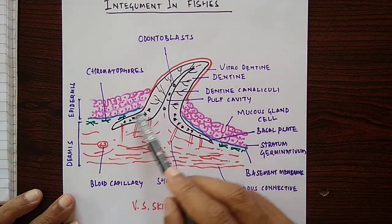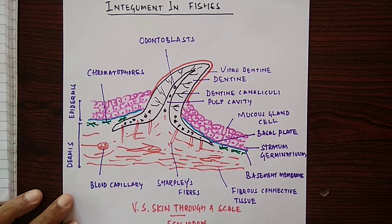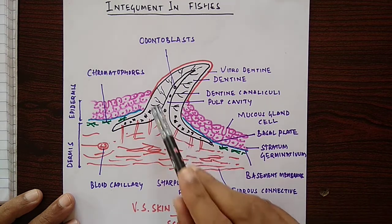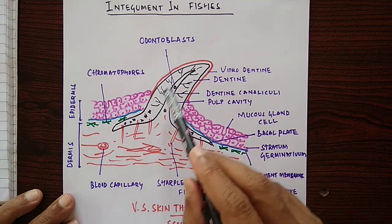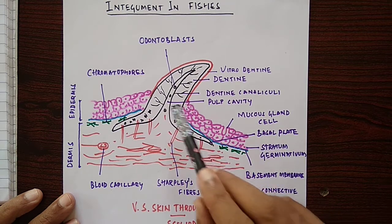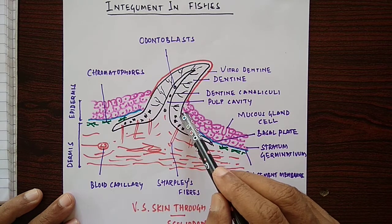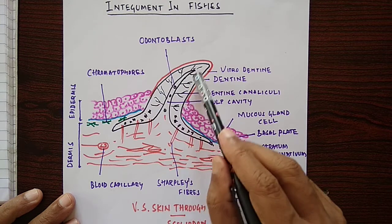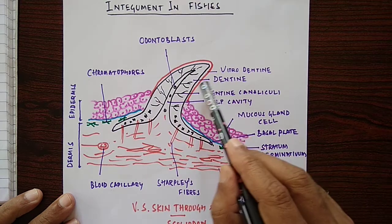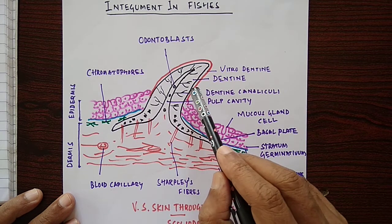This is the placoid scale in Scoliodon. Scoliodon belongs to Chondrichthyes (elasmobranchs), which are cartilaginous fishes. These fishes have microscopic placoid scales. A placoid scale has two parts: a basal plate embedded in the dermis, and an upper part projecting outside the epidermis. The upper part is made of dentine, which is externally covered by an even harder layer called vitrodentine.